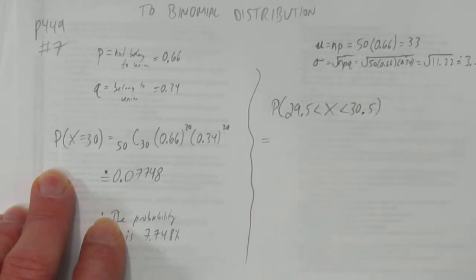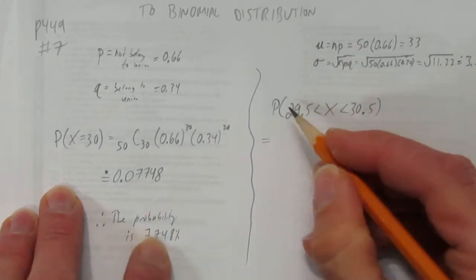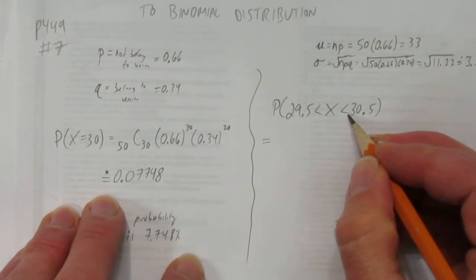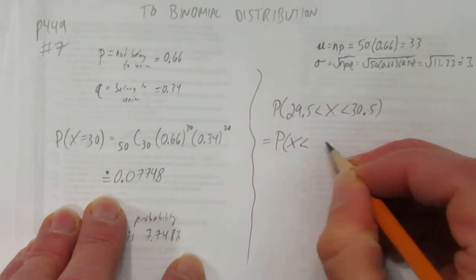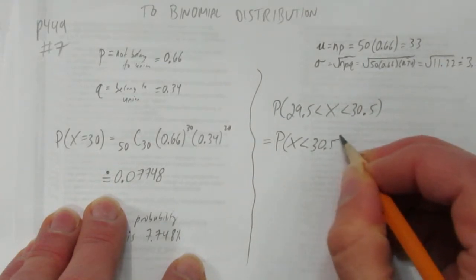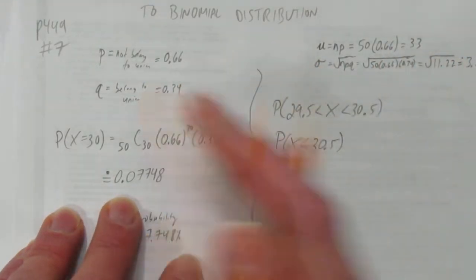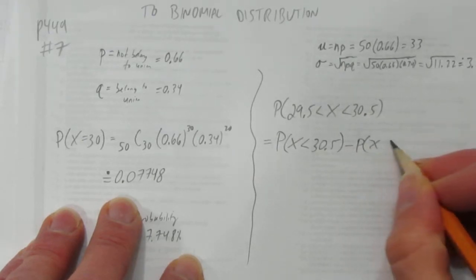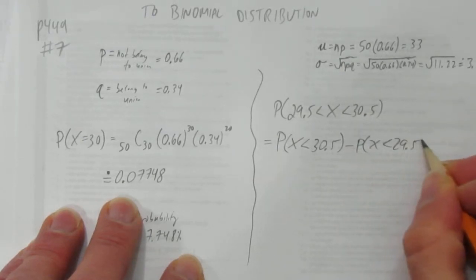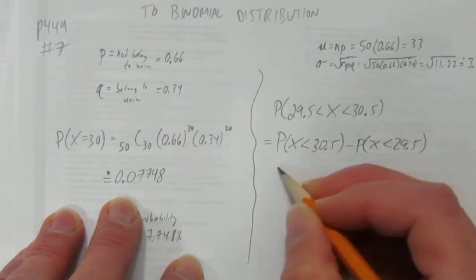Now I can do the normal approximation. But I have this range here. When I want to find between two numbers, I start with the second one. That's the probability of X being less than 30.5. That gives me everything below 30.5. I'm going to subtract off everything below 29.5. And I'll be left with everything between 29.5 and 30.5.